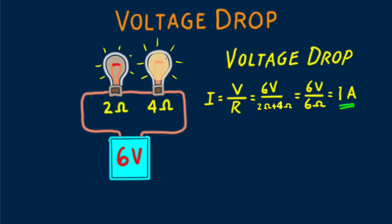If they both had the same resistance, it would be half. 3 volts across one, 3 volts across the other, totaling the 6 volts supplied by the battery.